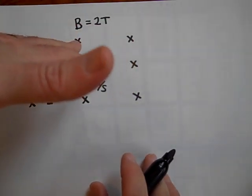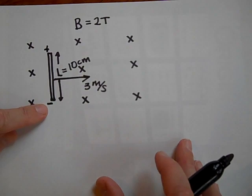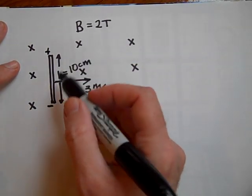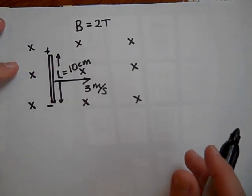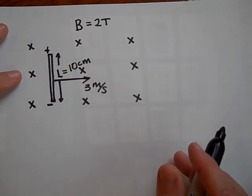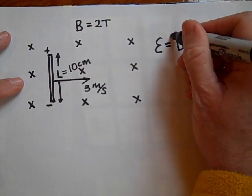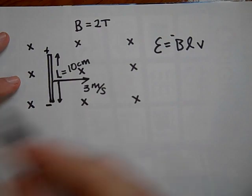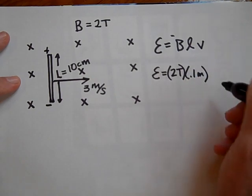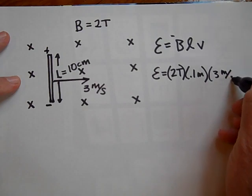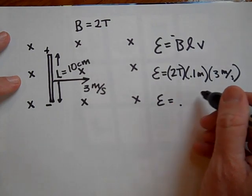If your electrons move that way and the field is into the page — notice I'm using my left hand — then they're going to be pushed down, that's why this end is negative. The EMF is going to be B times L times V. So the EMF induced is 2 Teslas times 0.1 meters times 3 meters per second, which gives 0.6 volts.